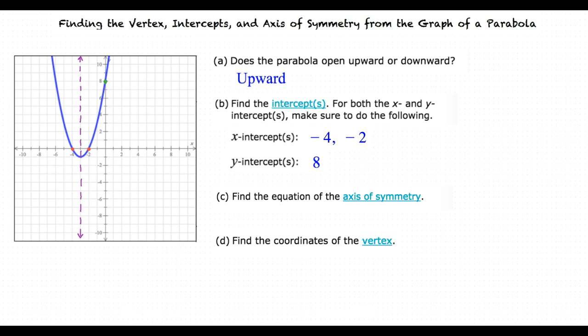Now that we know what the axis of symmetry looks like for this graph, what do you think the equation for the axis of symmetry is? Hmm. Since this line only crosses through the x value, negative 3, would that mean our equation for the axis of symmetry is x equals negative 3? Yes, that's right. Great job.